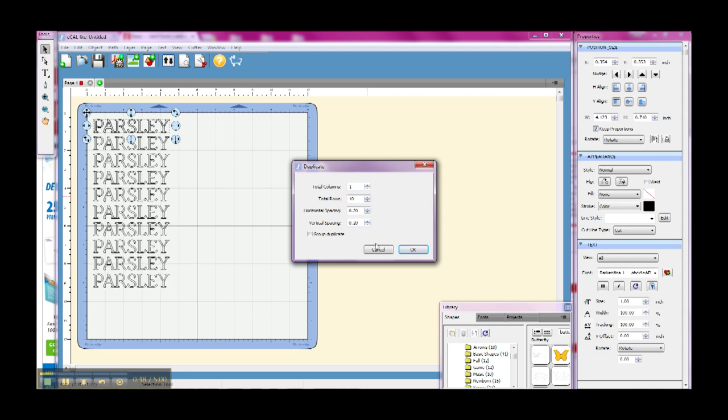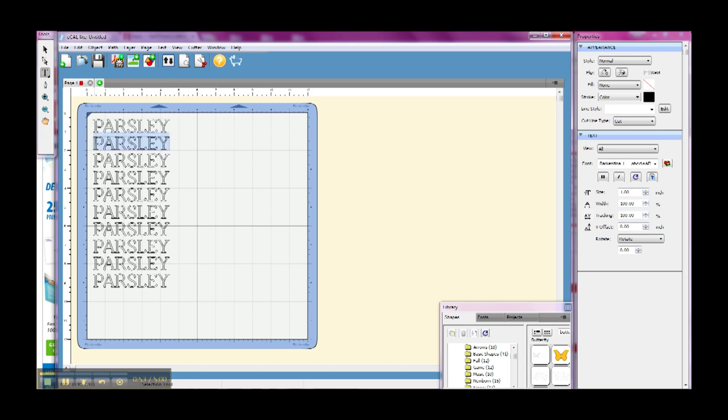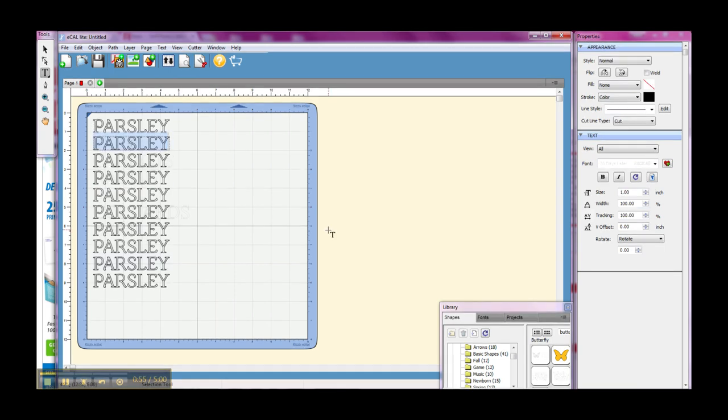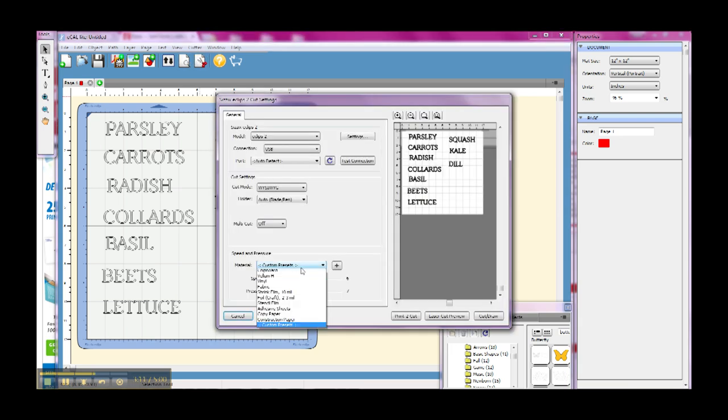I've typed my first word, and then I'm just using the duplicate button in the software to create ten of these words so that I can do all ten of my plant stake markers at the same time.